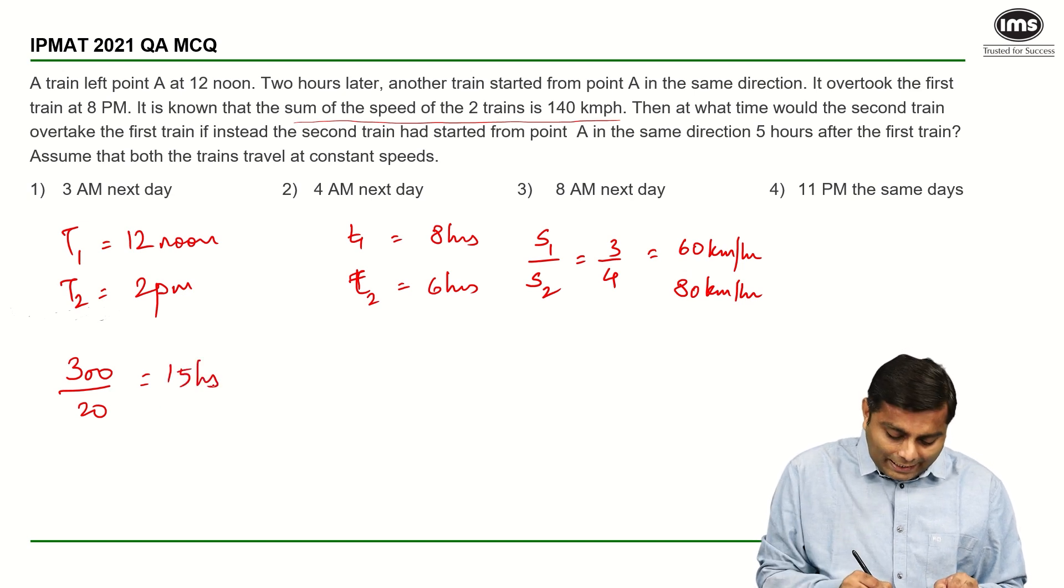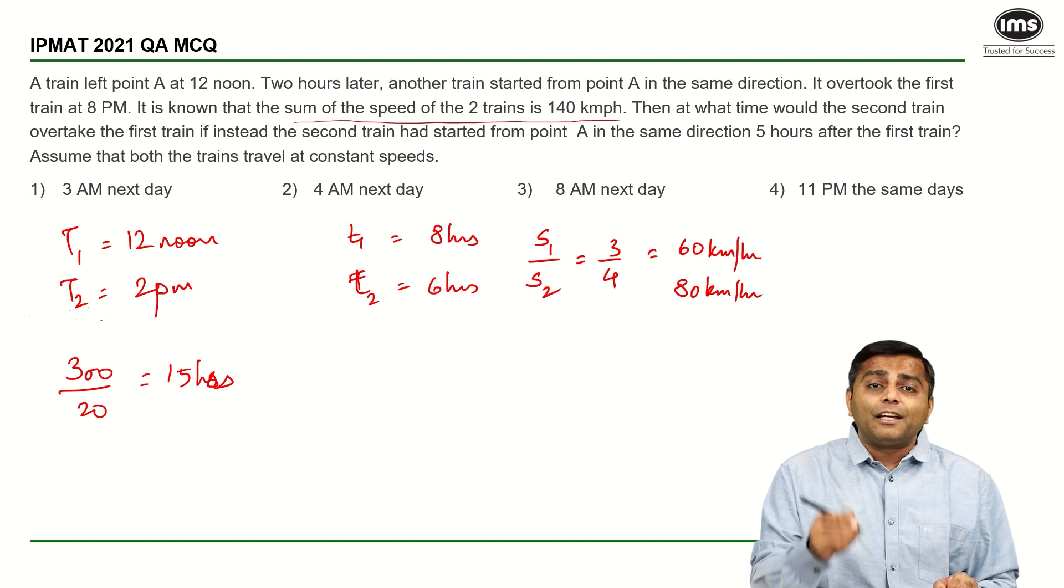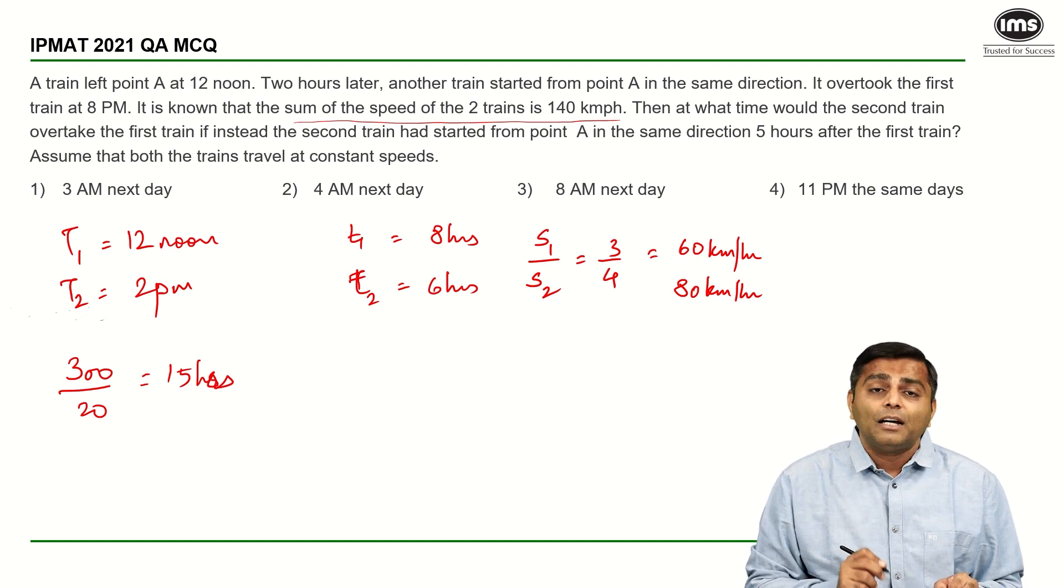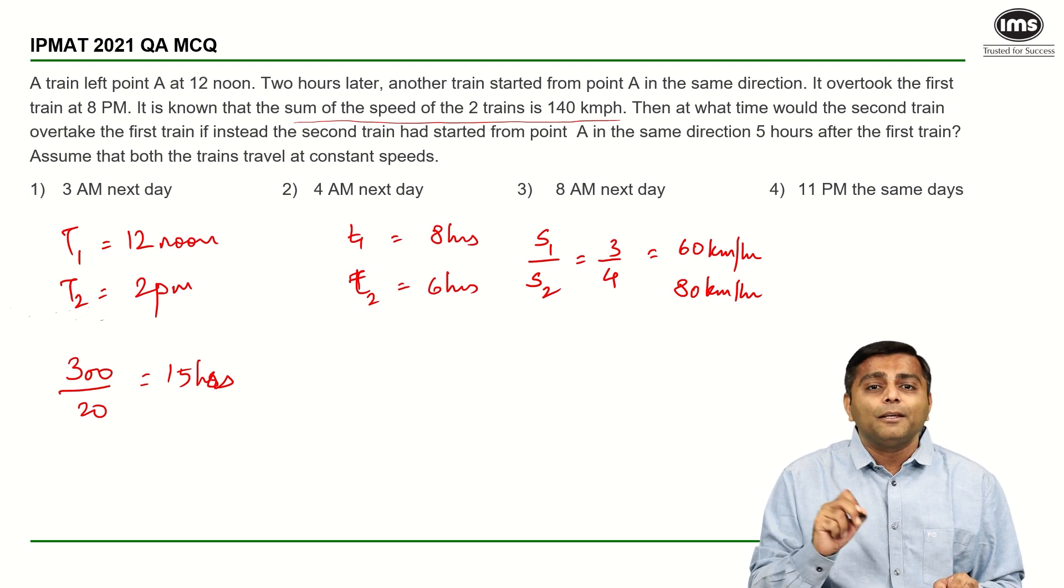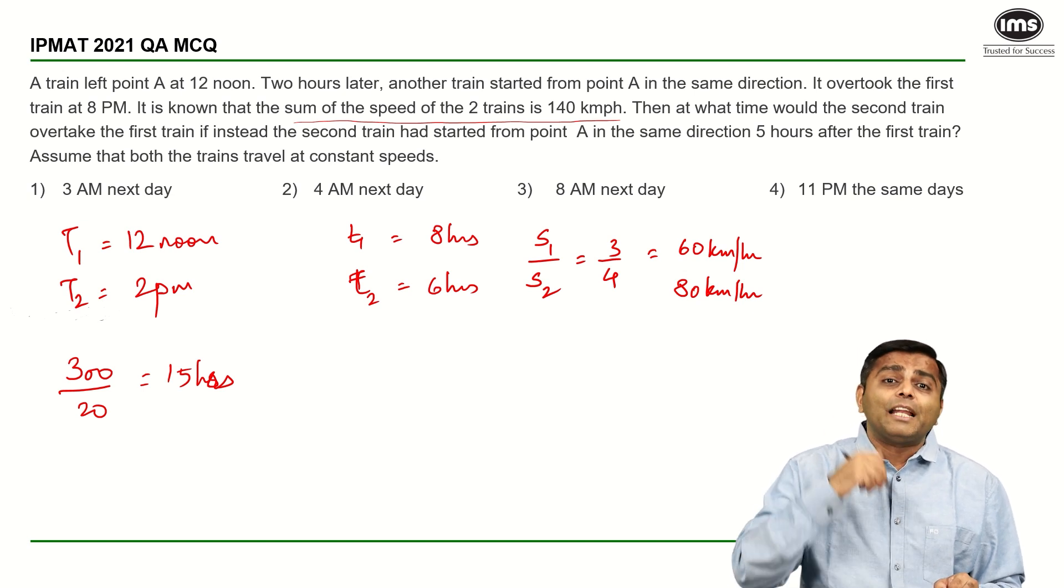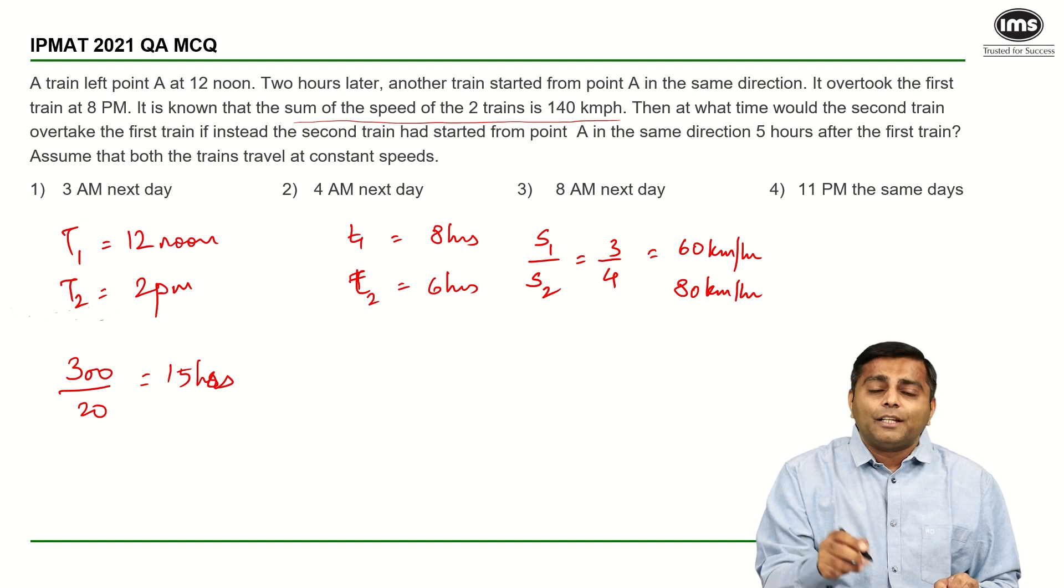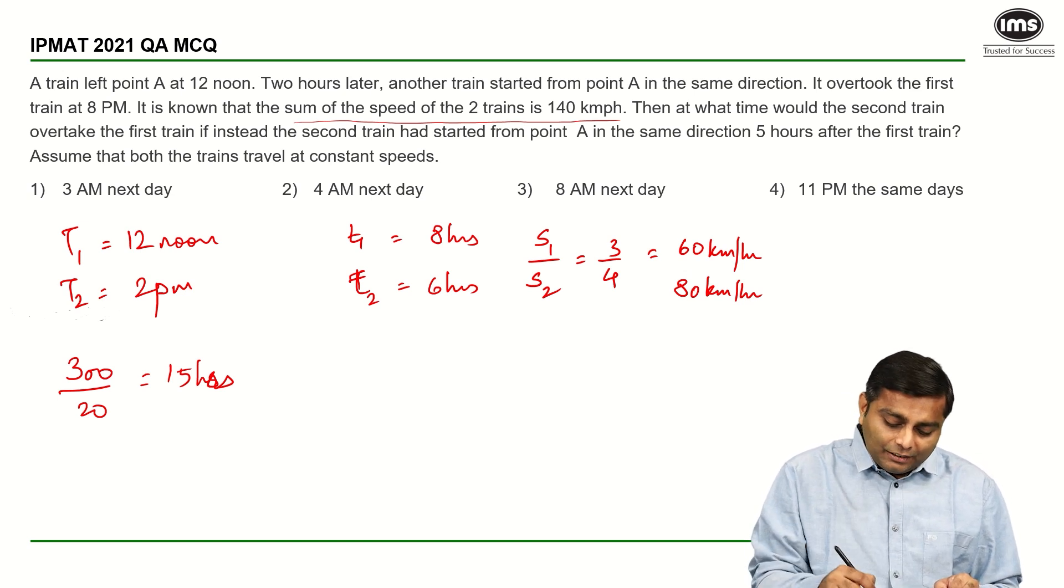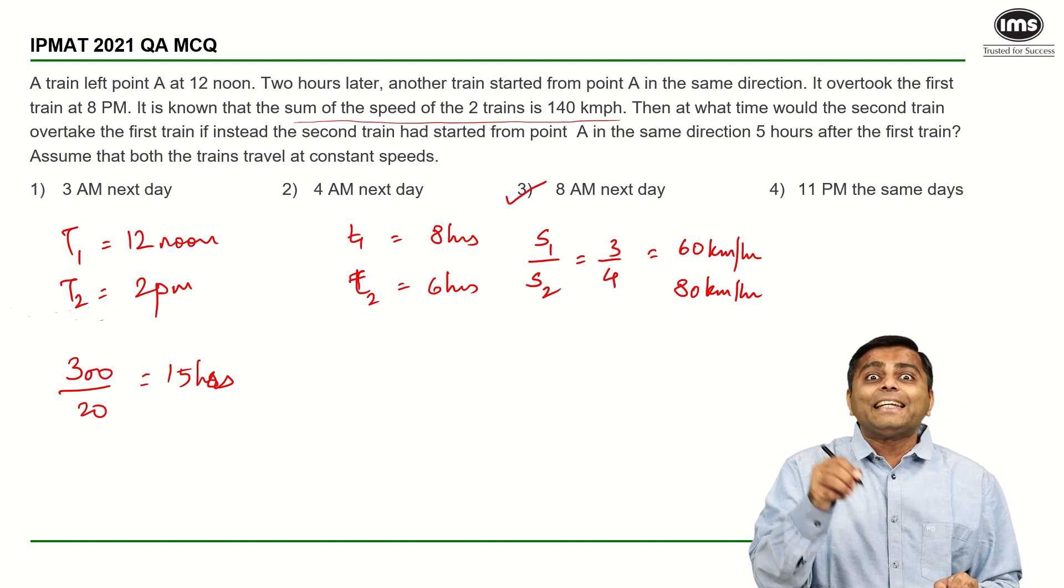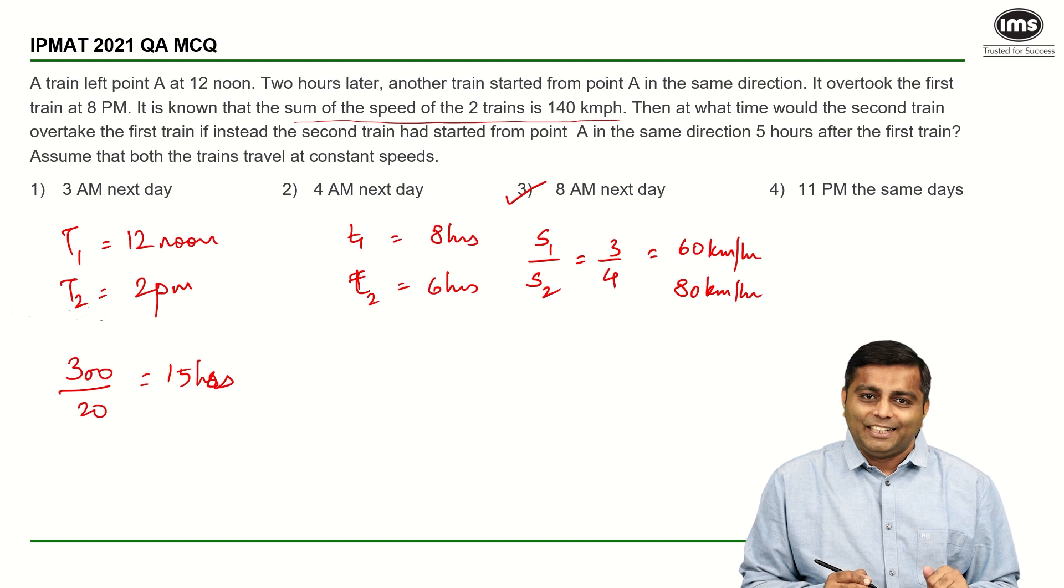Had the second train started 5 hours later, it would have taken 15 hours to meet, 15 hours after the second train, which means 15 hours after 5 pm. From 5 pm to the next day 5 am is 12 hours, plus 3. So, 5 am plus 3 is 8 am. The train would have met the first train at 8 am the next day. That is your answer, third option, 8 am the next day.